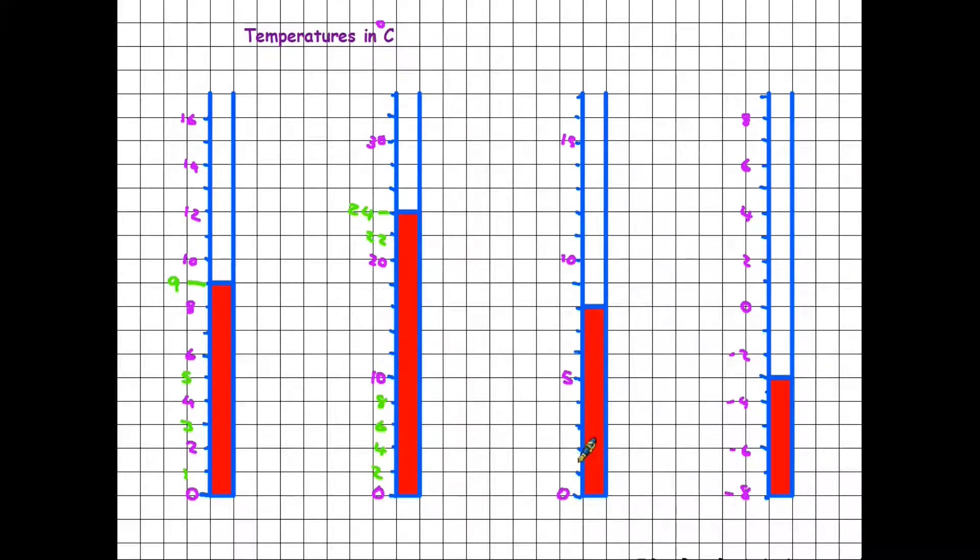This one is far more like the first one, in that each square goes up in ones: 1, 2, 3, 4, and then the 5. But again, not all the numbers are there. So when we are reading the temperature here, we have to be aware it's going up in ones: 5, 6, 7 - that must be 8 degrees.